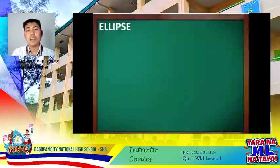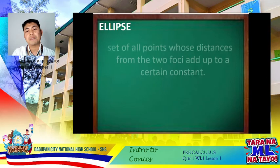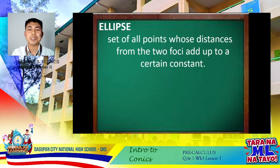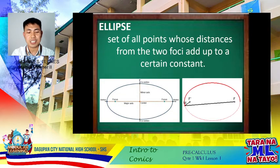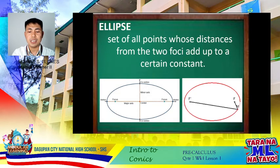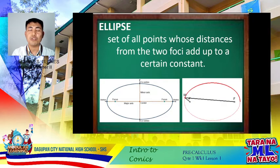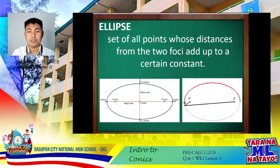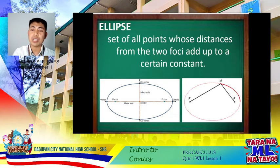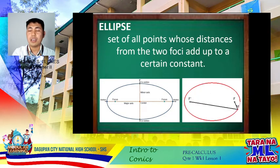An ellipse is the set of all points whose distances from two foci add up to a certain constant. An ellipse has two foci, two vertices on the major axis, and two co-vertices at the ends of the minor axis. These terms will be further discussed in our succeeding lessons, and the other diagram shows us how to graph an ellipse.